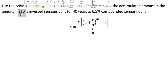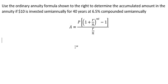So $10, that is P. The next one we have R, the interest rate, that's 6.5%. T, that's the years. So we have 40 years, so we put T equal to 40.